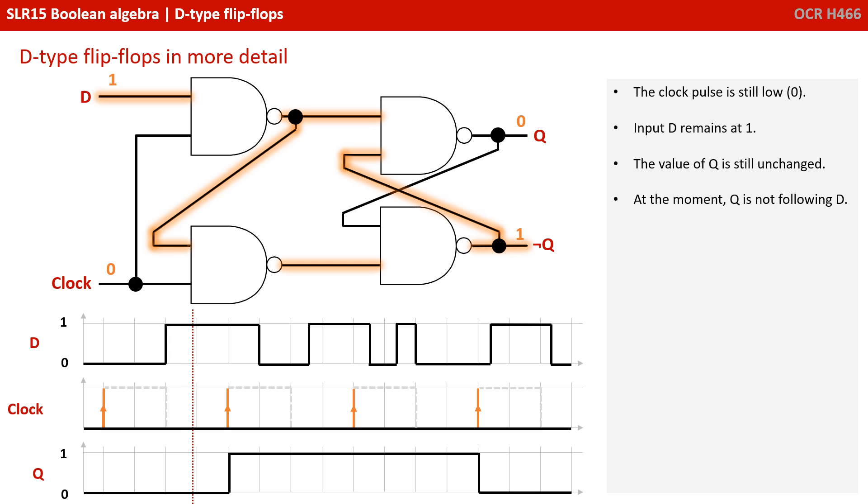The clock pulse is still low, zero, the input D remains at one, so the value of Q is still unchanged. At the moment, Q is still not following D.